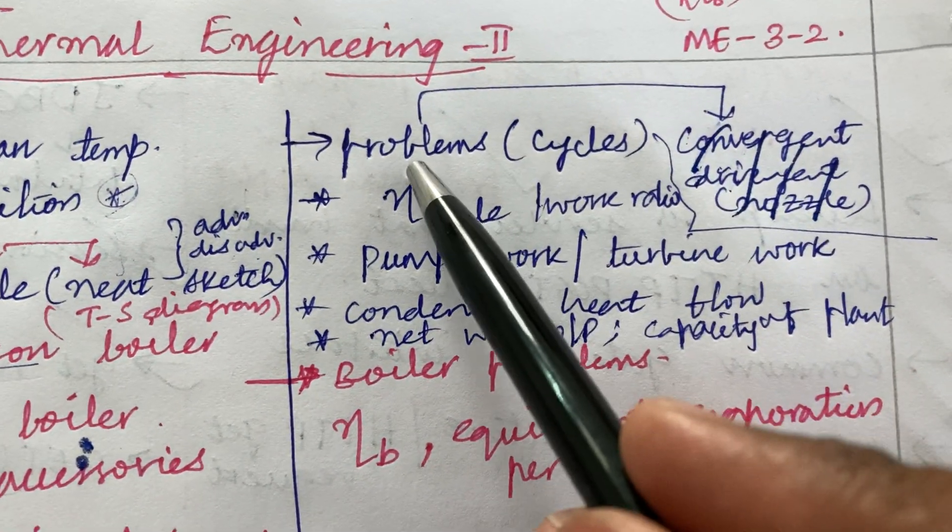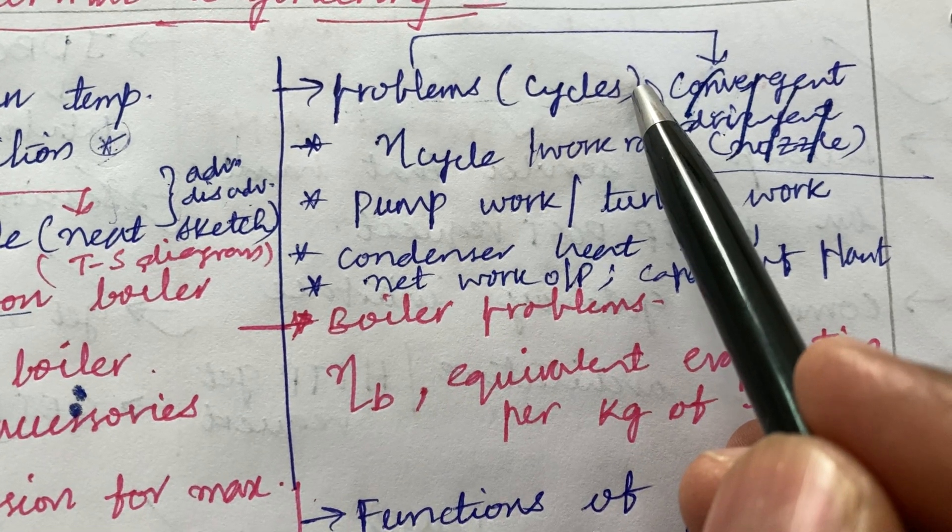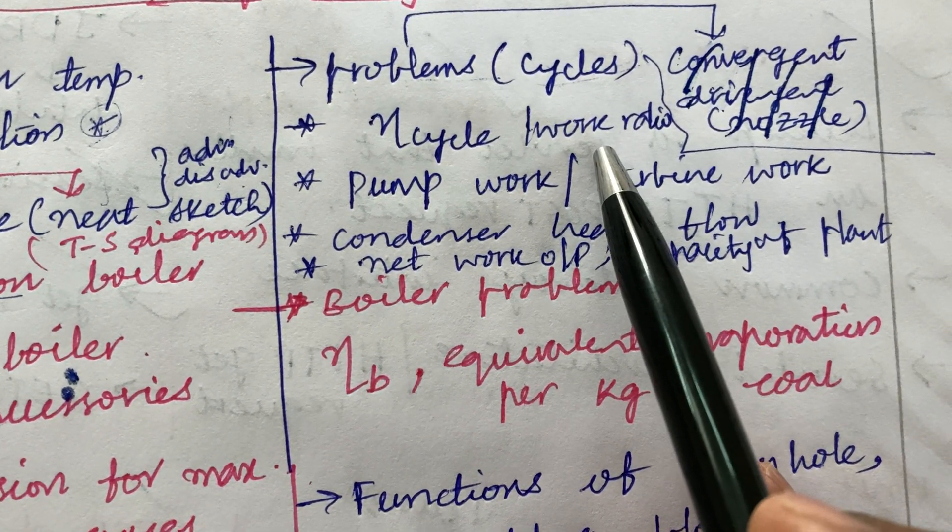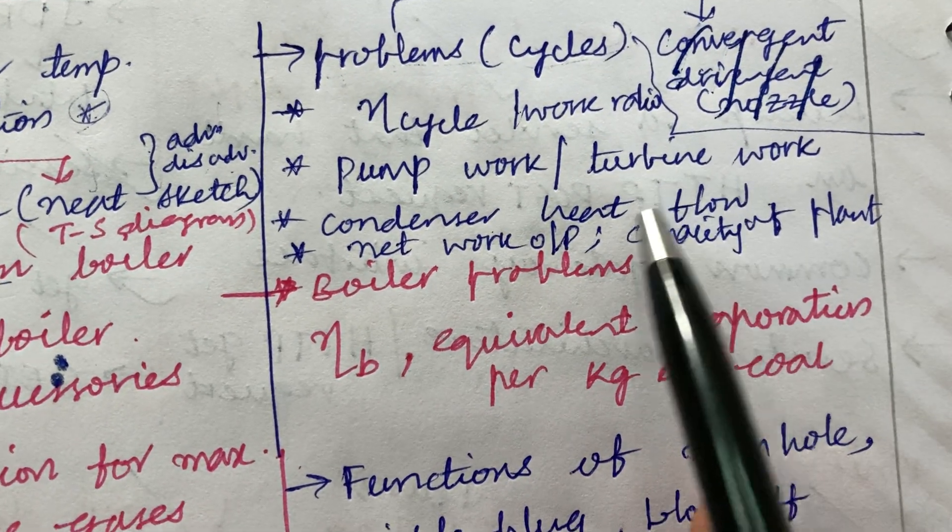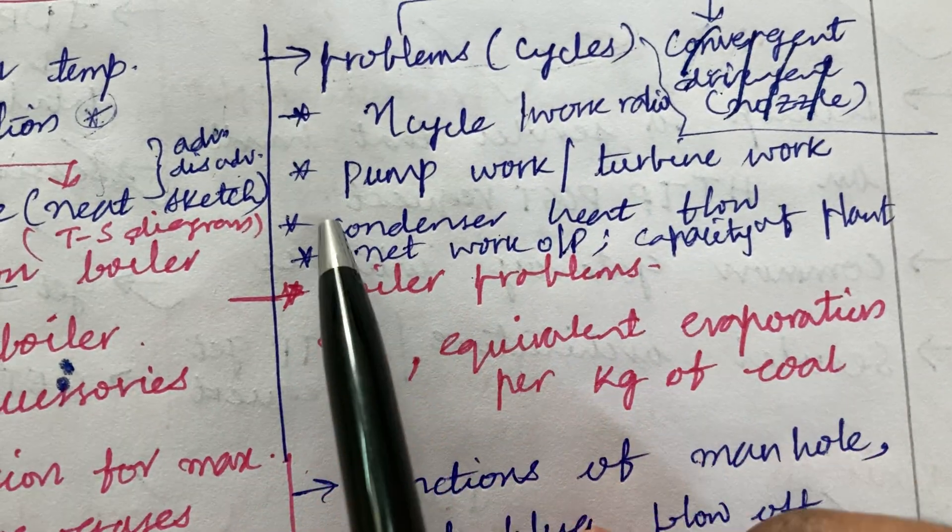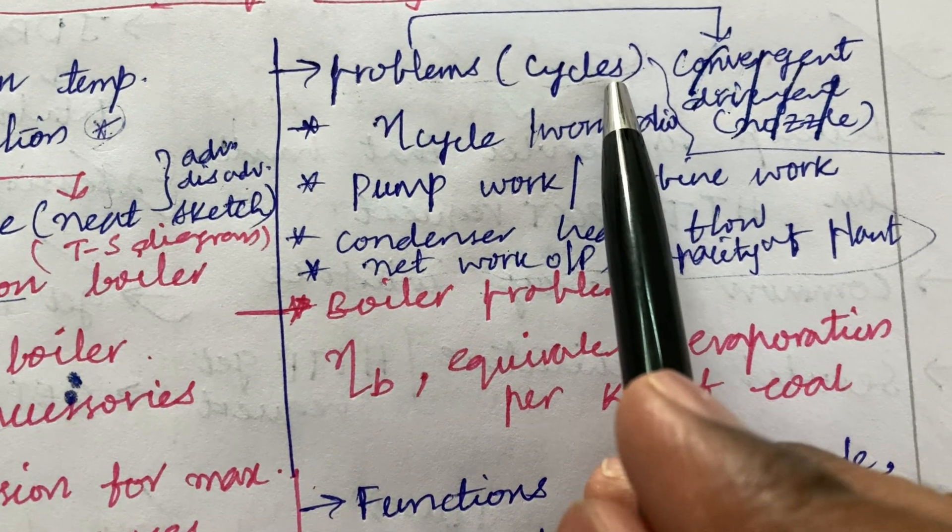Dear students, the problems are very much important in this course. It is all about different types of cycle problems in order to calculate the efficiency of the cycle or work ratio, pump work, turbine work, condenser heat flow and net work output and the capacity of the plant. Such type of questions will be asked under Rankine cycle or the regenerative cycle.